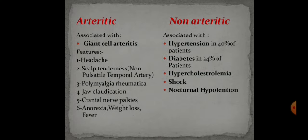The main etiology behind arthritic AION is giant cell arteritis. If the patient presents with features like headache, scalp tenderness, polymyalgia rheumatica, jaw claudication, cranial neuropalsies, anorexia, weight loss, or fever, it is suggestive of giant cell arteritis. The risk factors behind non-arthritic AION include hypertension, diabetes, hypercholesterolemia, shock, and nocturnal hypotension.